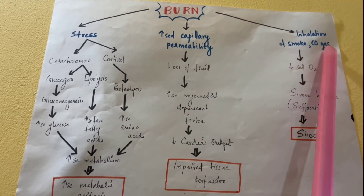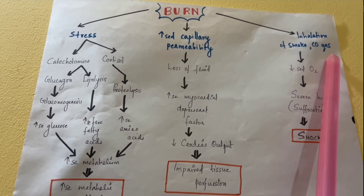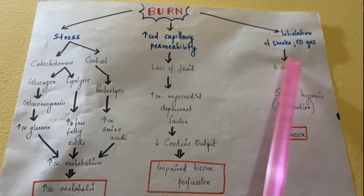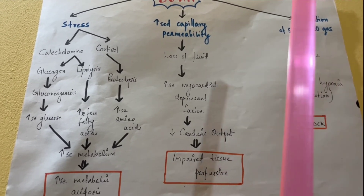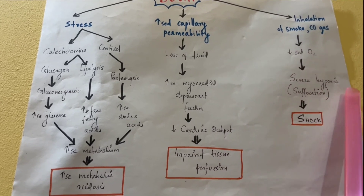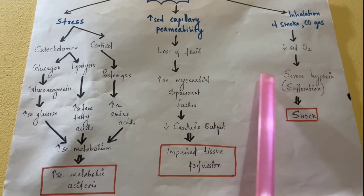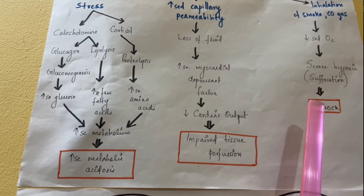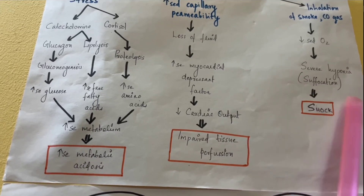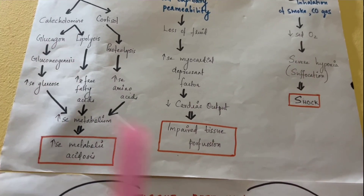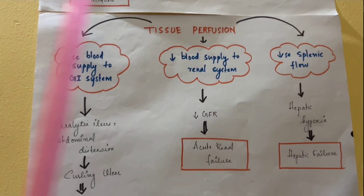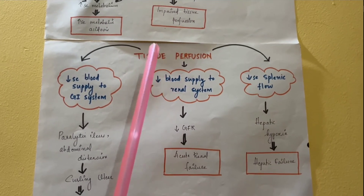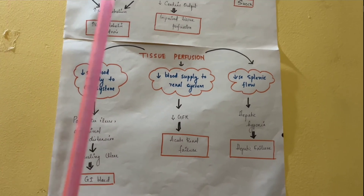The third major factor is inhalation of smoke. When a burn patient inhales smoke, oxygen levels are reduced, causing severe hypoxia. This hypoxia leads to shock. The resulting shock causes impaired tissue perfusion and reduced blood supply to vital organs.